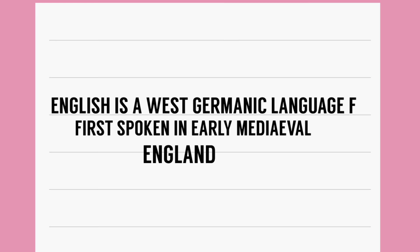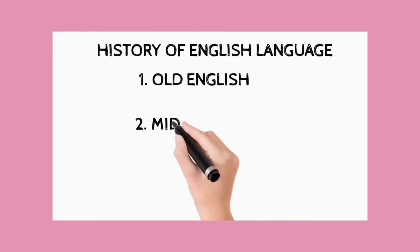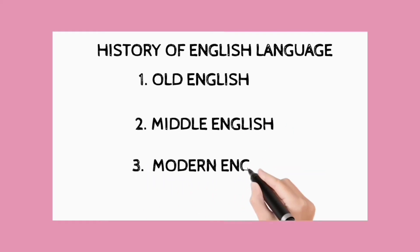English language की history को हम three main periods में divide करते हैं। Literature की history जानने से पहले यह जानना जरूरी है कि language की history को किन parts में divide किया जाता है। English language की history के three parts हैं: Old English, Middle English, and Modern English۔